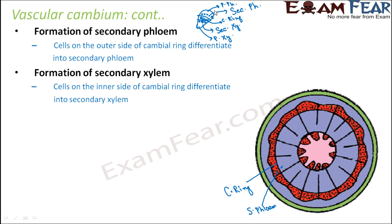This is how the thickness keeps on increasing. Earlier there were only two layers — primary xylem and primary phloem. Then it became primary xylem, cambium ring, secondary phloem, and primary phloem. Then it became primary xylem, secondary xylem, cambium ring, secondary phloem, and primary phloem. As the layers keep increasing, the thickness of the stem basically increases.